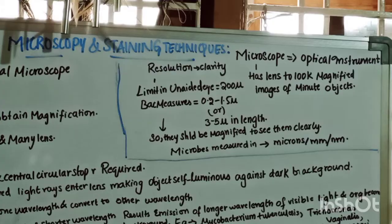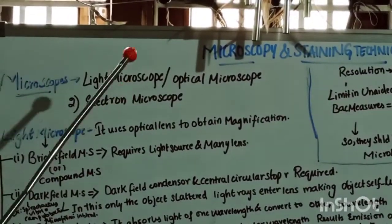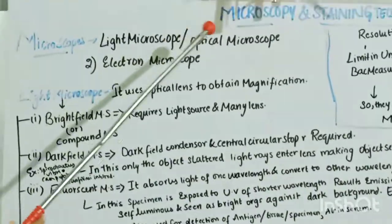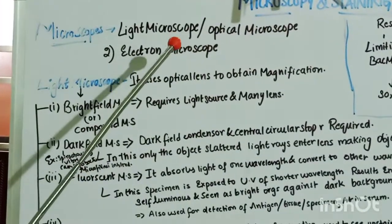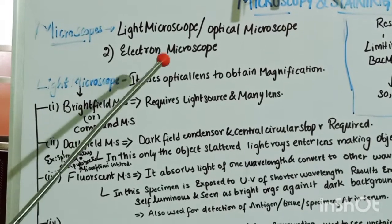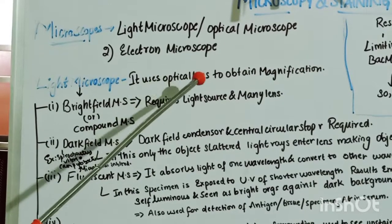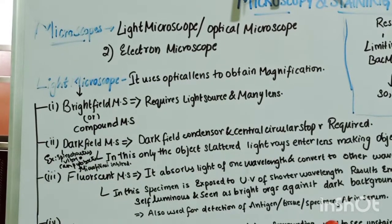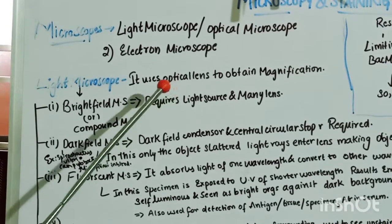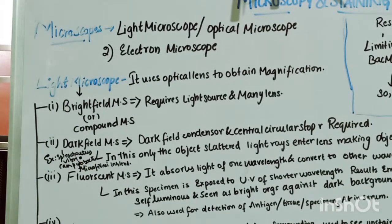Now let us see about microscopy. Microscopy uses basic microscopes like the optical microscope and the electron microscope. The light microscope uses optical lenses to obtain magnification. It is divided into four types: the bright field microscope, also known as the compound microscope; the dark field microscope; the fluorescent microscope; and the phase contrast microscope.